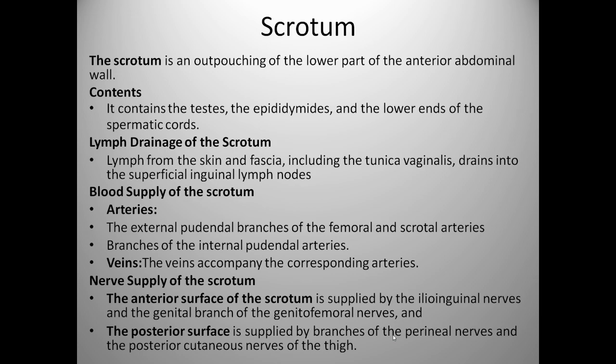First, we will see the scrotum. It is an outpouching of the lower part of the anterior abdominal wall and it will contain the testis, epididymis, and the lower end of the spermatic cord. Lymph drainage from the skin and fascia, including the tunica vaginalis, will drain into the superficial inguinal lymph nodes. Blood is supplied by the arteries — the external pudendal branches of the femoral and scrotal arteries — and there are branches of internal pudendal arteries that supply the scrotum, and veins that accompany the corresponding arteries.